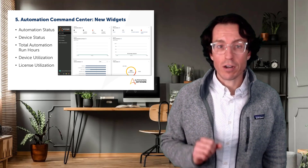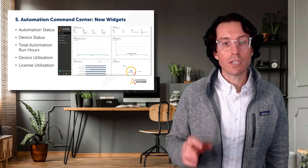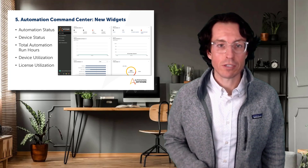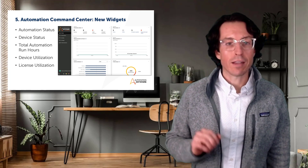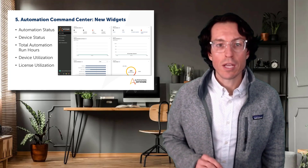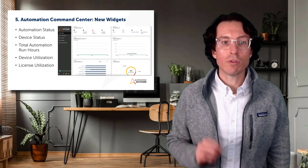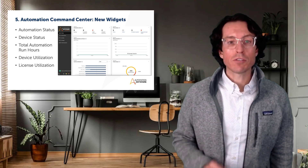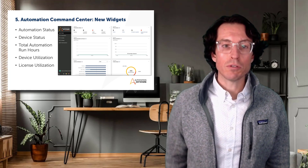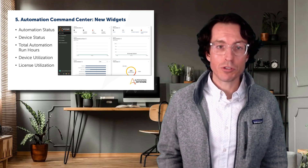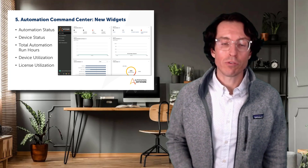If you log in as an automation leader, this is your single pane of glass for more operational metrics. You're going to see details like license and device utilization, automation run hours, and some stats related to recent successful and failed automations. For more details on customizing the views or understanding all the new widgets available to you, hit the link in the description for a rundown from our docs portal.